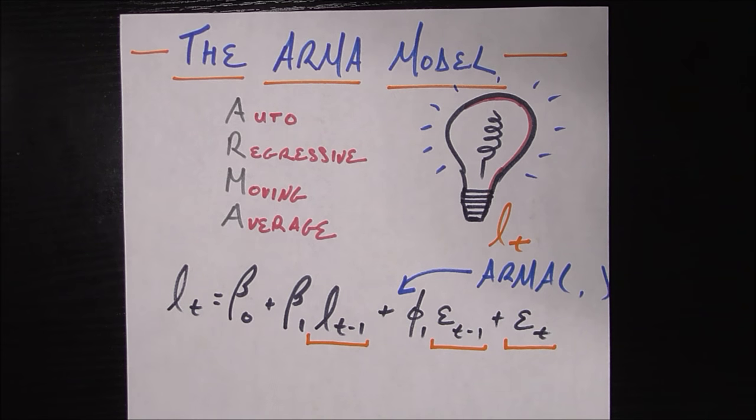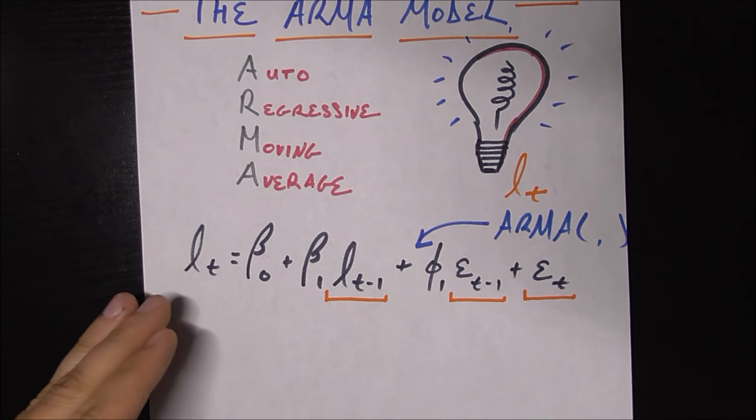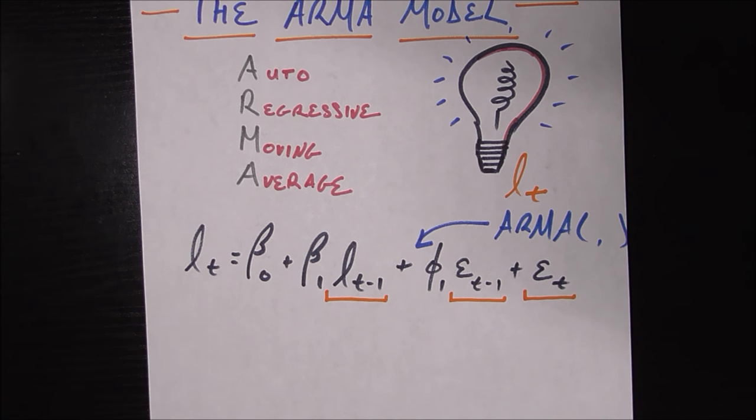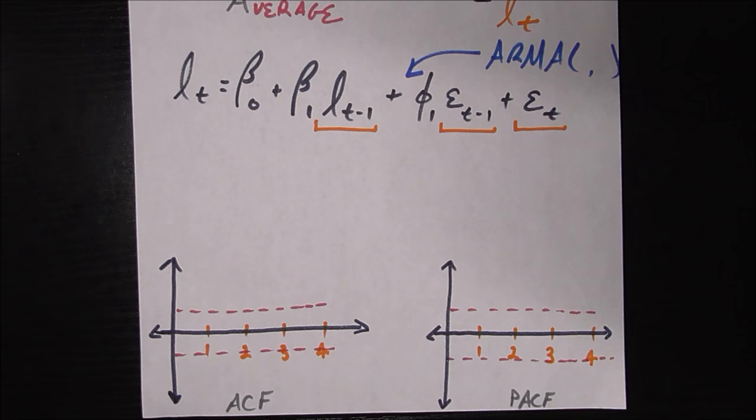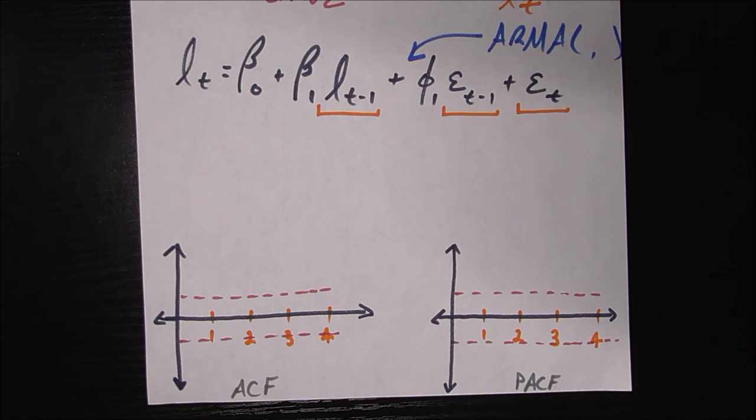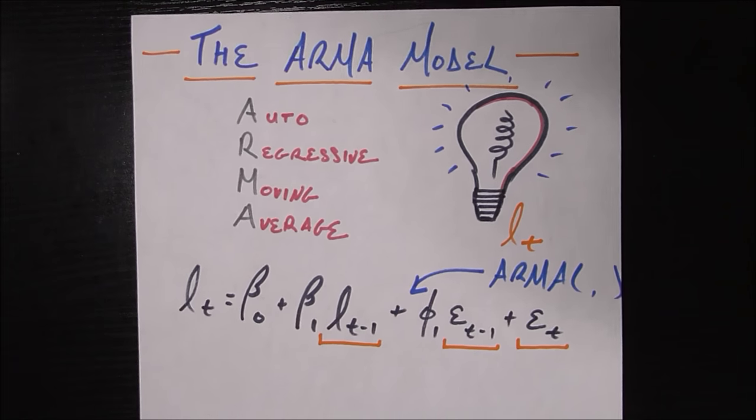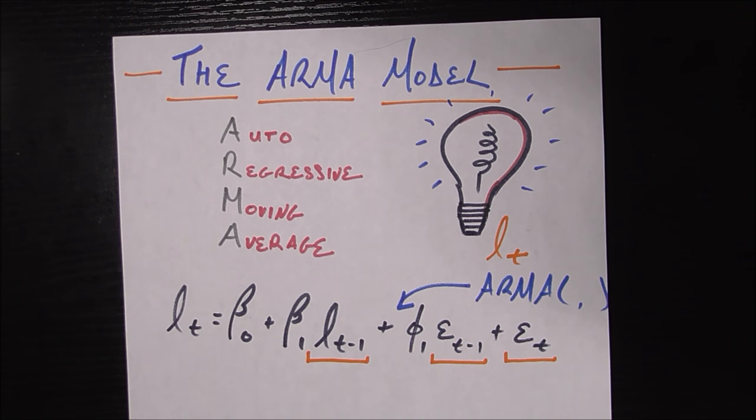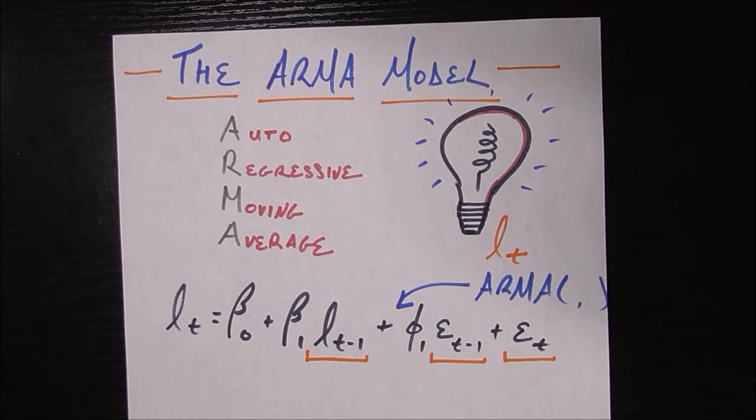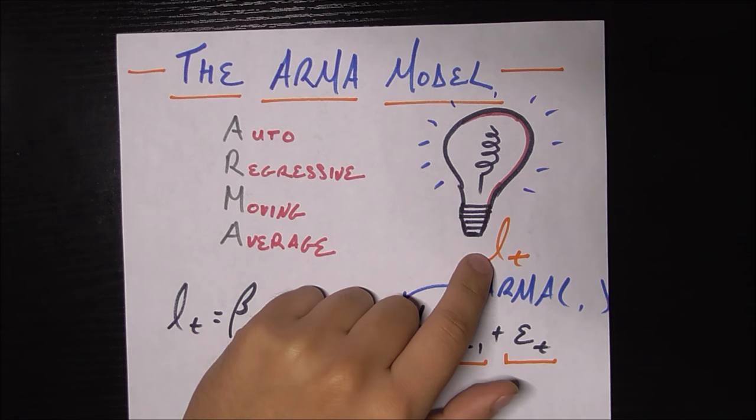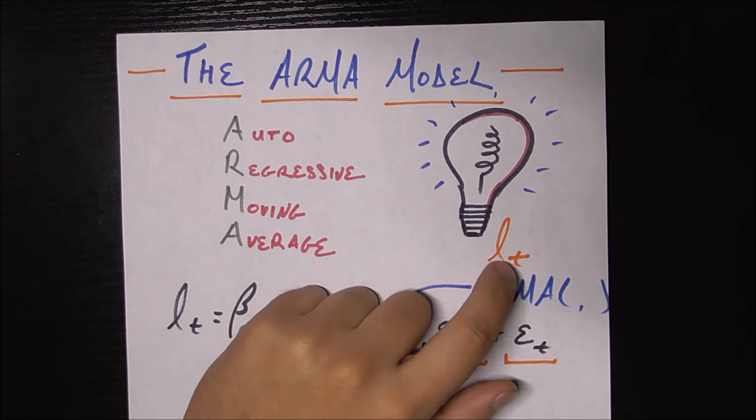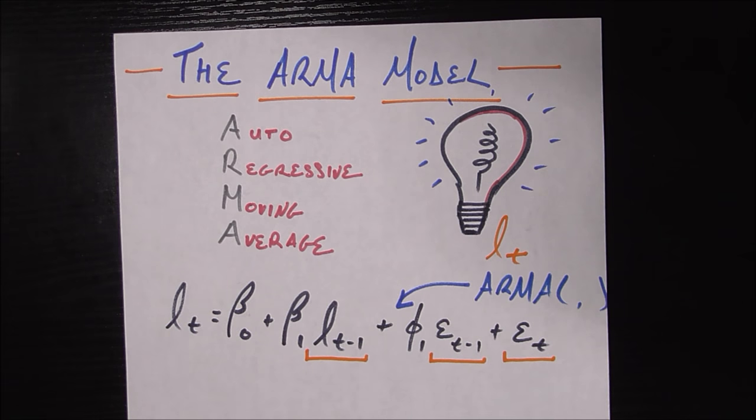So let's set up the situation and talk about the components of the ARMA model, the most simple type, as well as if you see a time series in the wild, how you can identify what kind of ARMA model it might be. The setup is that you are a light bulb manufacturer and your challenge every month is to figure out how many light bulbs you should make to meet your demand. That value is L sub T, L for light bulb, and the subscript T is the given month you're in.